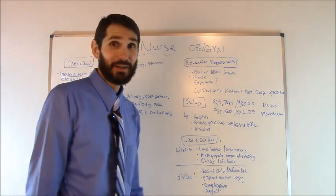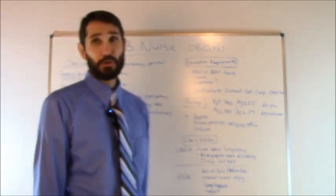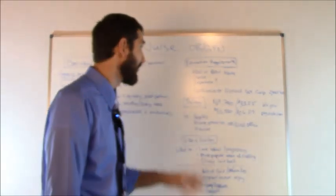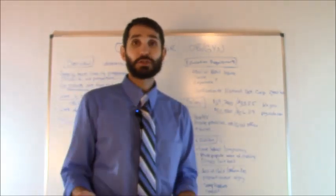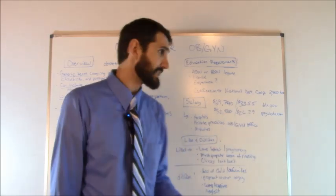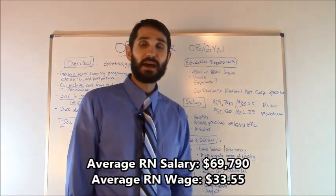Now let's talk about salary information. How much money does an OB nurse make? Well, according to the Bureau of Labor Statistics, which is the government organization that compiles jobs data, the average salary for a registered nurse in the United States was $69,790 as of 2014. The hourly wage average was $33.55.